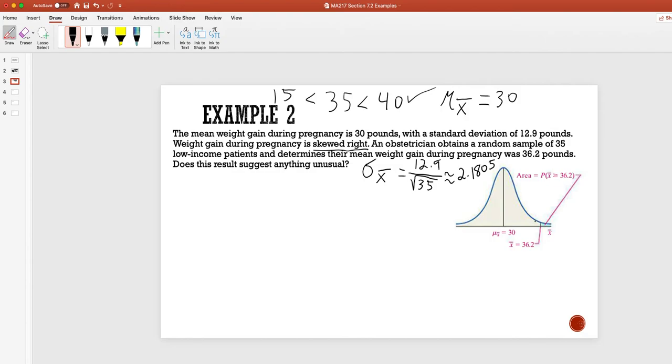And we already have this picture to show that we want the value greater than 36.2 in order to determine if there's anything unusual. So, we want this area that's highlighted here in kind of a light blue color. So, we are calculating the probability that x-bar is going to be greater than 36.2. So, in order to do that, we need to take, since we want it to be greater than that,